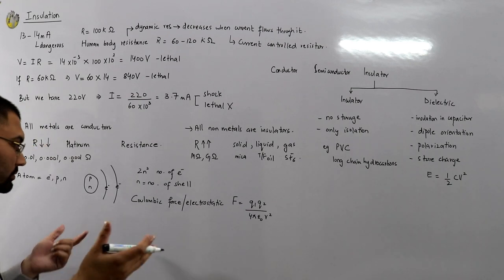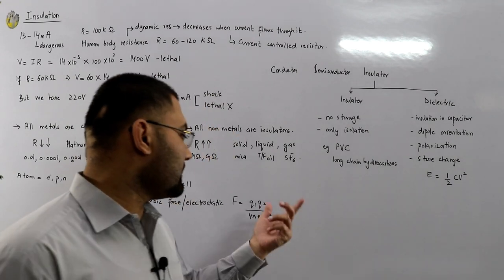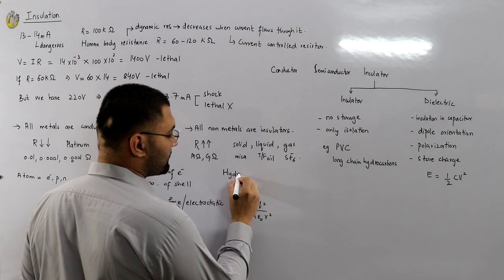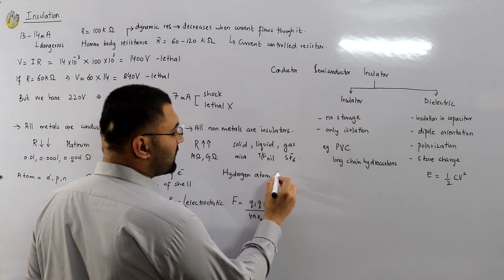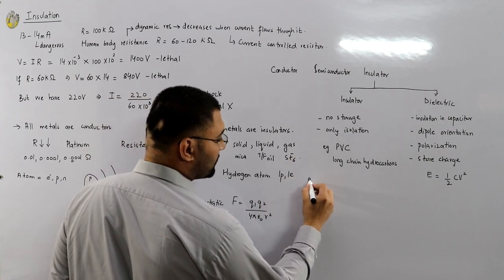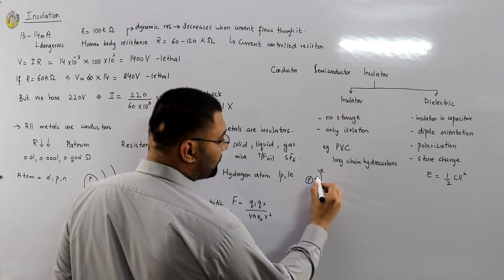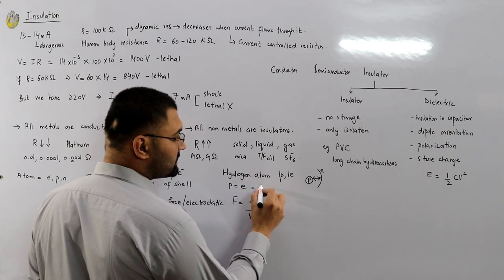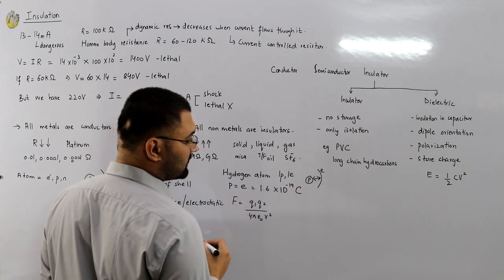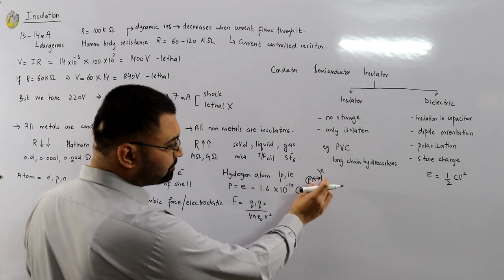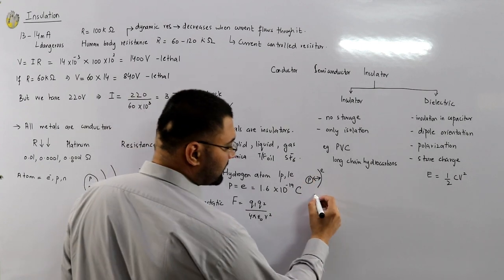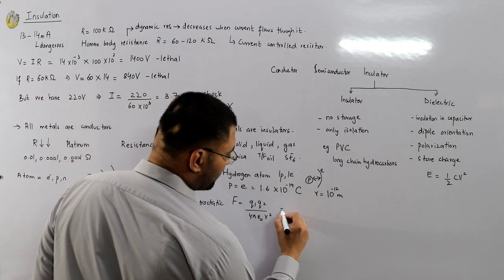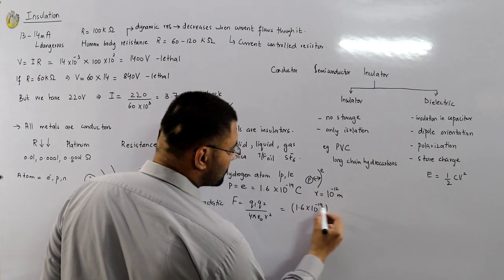In this formula, q1 is the charge of the proton, q2 is the charge of the electron, ε₀ is the permittivity of free space, and r is the distance between them. Let's consider a hydrogen atom — it is the simplest, with only a single proton and a single electron and no neutron. The charge of a proton equals the charge of an electron in magnitude, which is 1.6 × 10⁻¹⁹ coulombs. The distance between the nucleus and the first shell for a hydrogen atom is taken as 10⁻¹² meters.